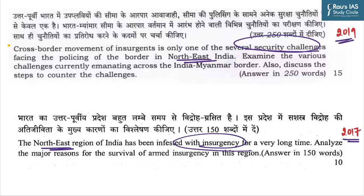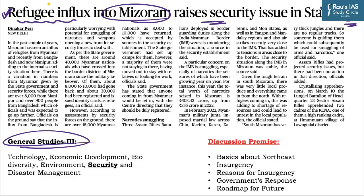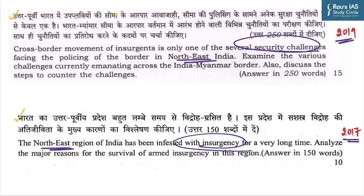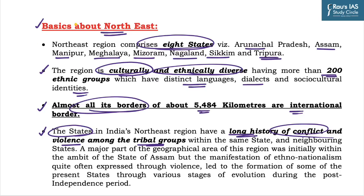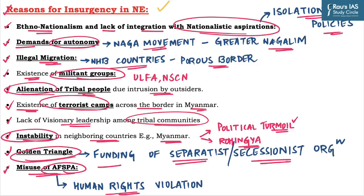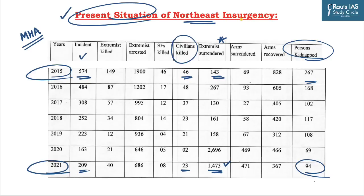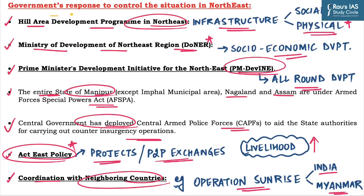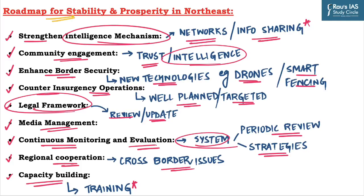It is crucial to address both the security aspect and the underlying socio-economic issues to achieve sustainable peace and stability in the Northeast region. A quick recap of our discussion: we covered the context, its relevance for General Studies paper 3, previous year questions, basics about Northeast, the definition of insurgency, reasons for insurgency, the present situation, government's response, and a roadmap for stability and prosperity in Northeast.